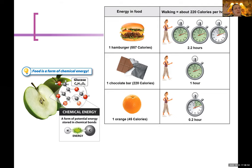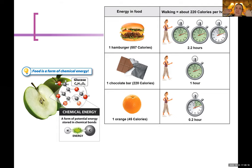The unit of measure that we use for energy is calories. We talked about this when covering trophic structure — the energy pyramid, where 90% is lost as heat and energy transfers are only 10% efficient. Calories with a capital C really means kilocalories. A calorie is the amount of energy required to raise the temperature of one milliliter of water by one degree Celsius.